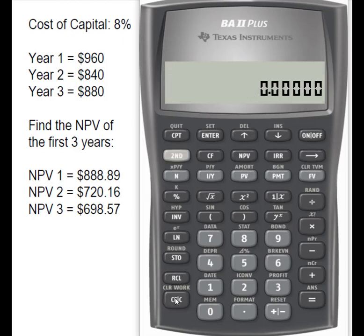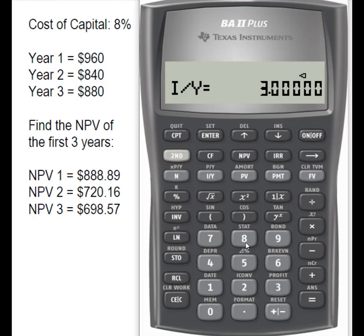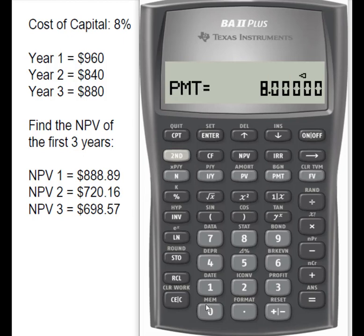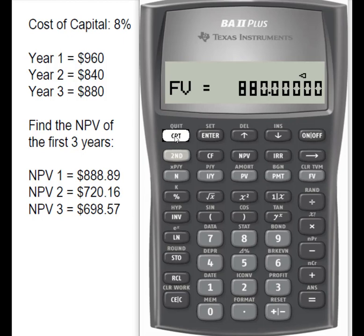For year two, we have a present value of $720.16. So we still have to do year three. We clear our time value of money keys. In year three, N is three, same cost of capital of 8%, payment of zero, and the future value is a cash flow of $880. We compute our present value, and that gives us $698.57.